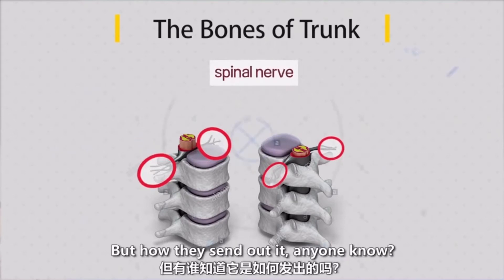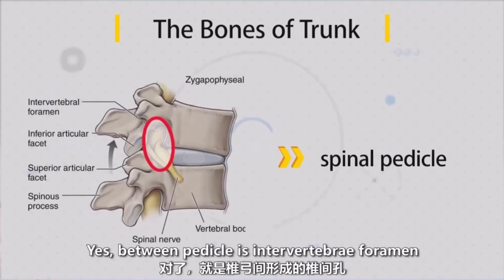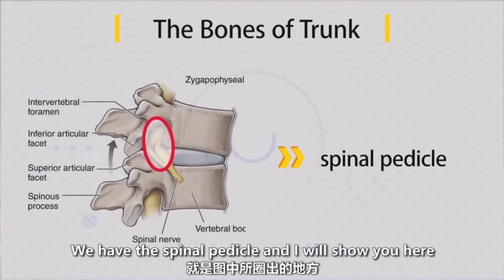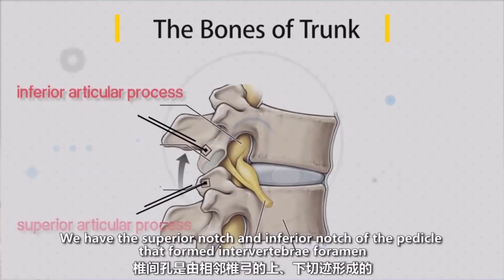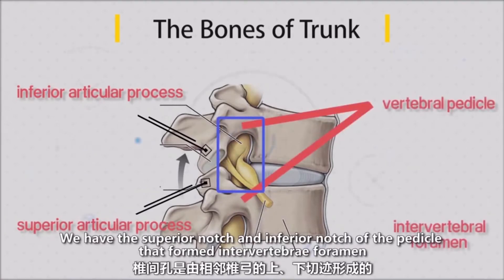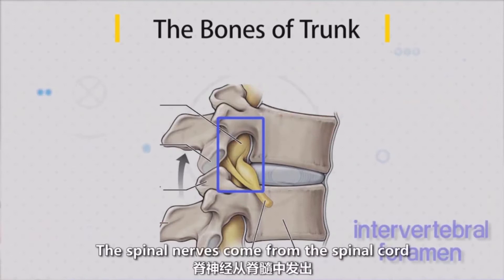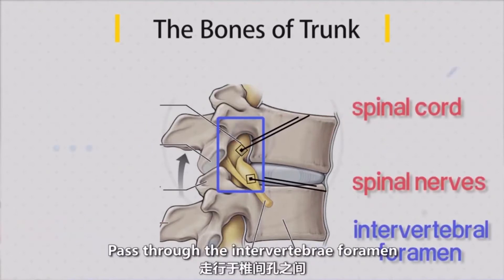How does the spinal nerve come out? Remember the pedicle? We have the spinal pedicle — it has a superior notch and inferior notch, so they form the intervertebral foramen. The spinal nerve from the spinal cord passes through the intervertebral foramen and then comes out.